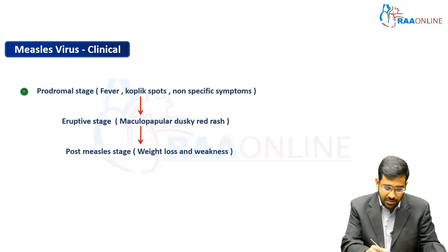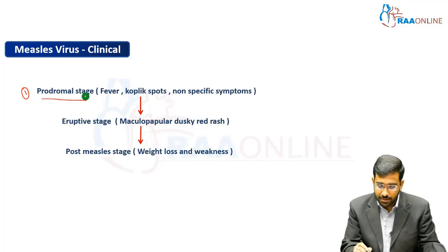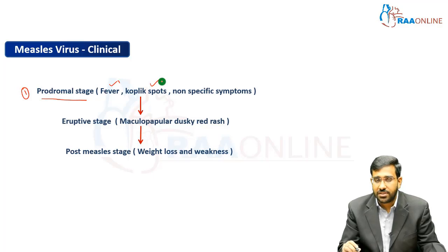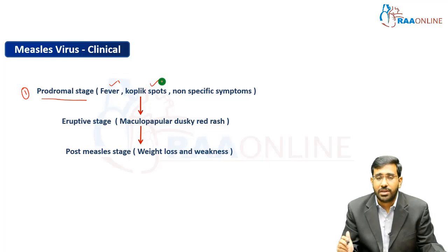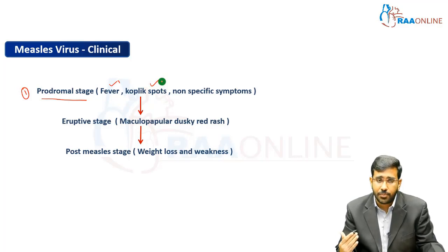The first phase is going to be the prodromal phase. In the prodromal stage, the pediatric population is going to get fever, and then we have something called Koplik spots, and non-specific symptoms like fever, headache, and myalgia. There can also be sweating. These are the non-specific symptoms seen in the prodromal stage.